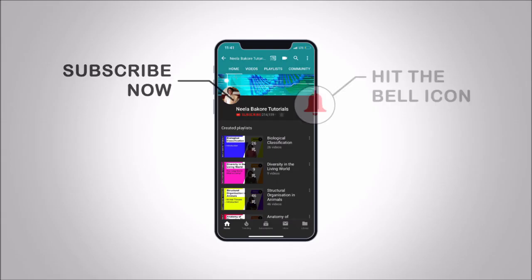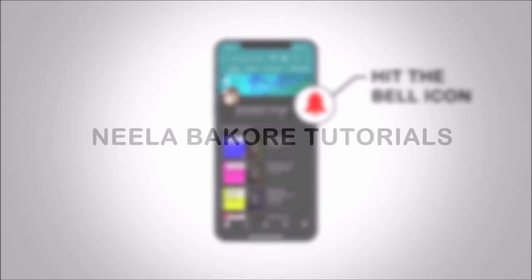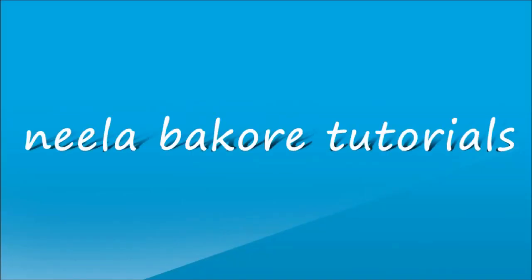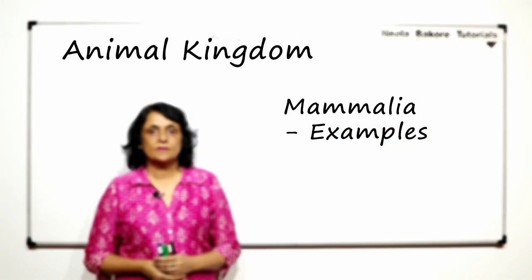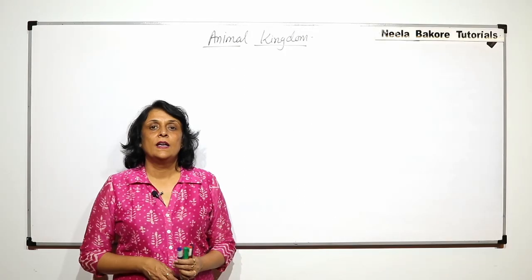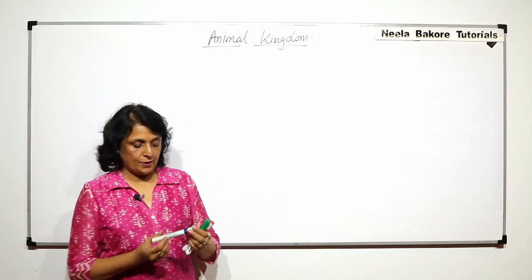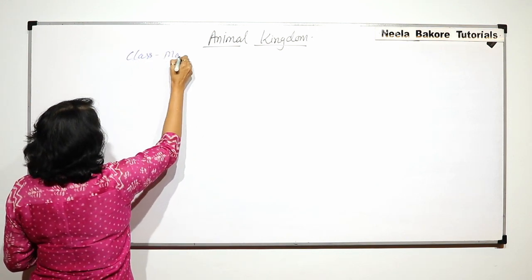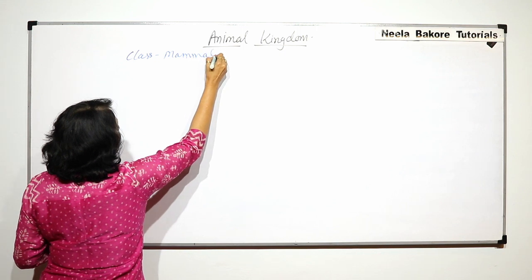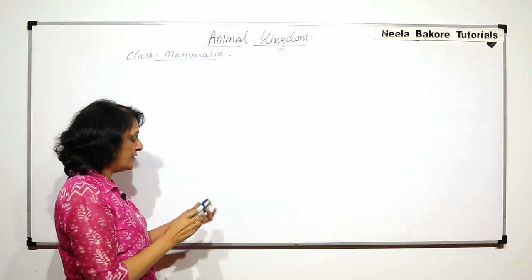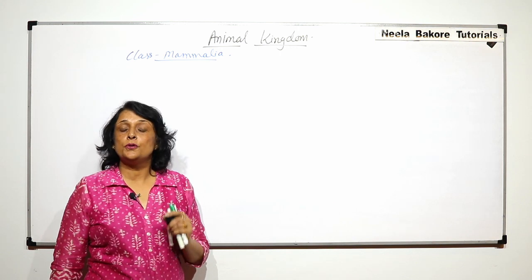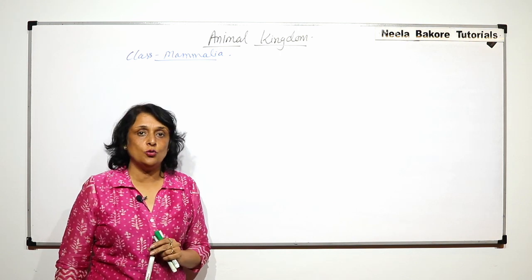Hit that subscribe button and bell icon so you never miss an update from Neela Bakore Tutorials. In this part, we'll take up some important examples of class Mammalia. We have seen the general characteristic features and also talked about the three groups: prototherians, metatherians, and eutherians.